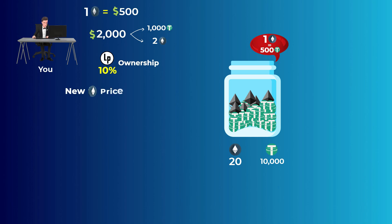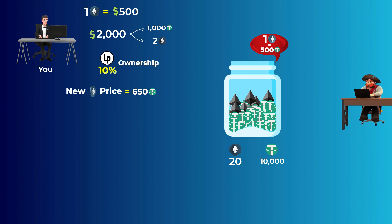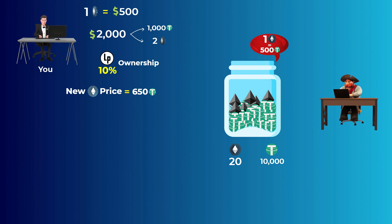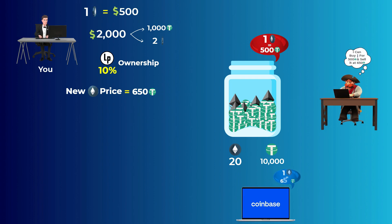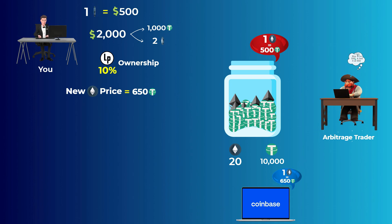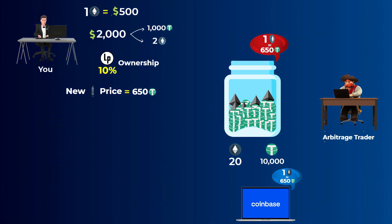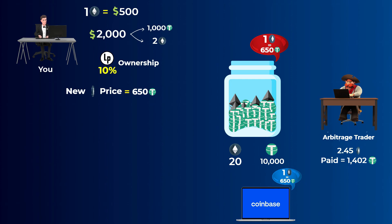After 6 months the price of Ethereum jumps to $650, but the pool still sells 1 Ethereum for $500. Traders can see they can make an easy profit by buying cheap Ethereum from your pool at $500 and selling it on other exchanges at $650. Traders who do this are called arbitrage traders. The pool will begin to raise the price of Ethereum as the trader continues buying, until the price reaches $650 — that is when no more profit can be made. By calculation, the maximum amount of Ethereum this trader can buy before the price reaches $650 is 2.45 Ethereum, and they paid 1,402 Tether tokens for them.